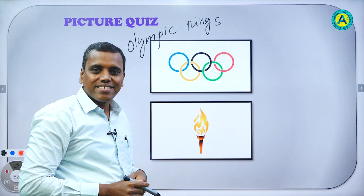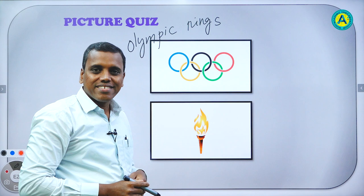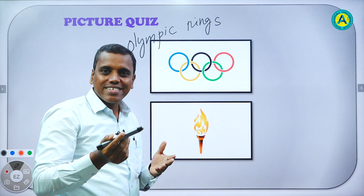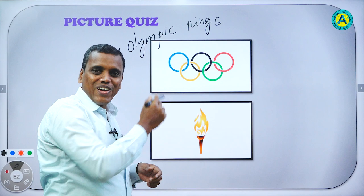Now look at the second picture. What do you see? It's a torch. Can you recognize it? It is also related to the Olympics. It is called the Olympic torch.